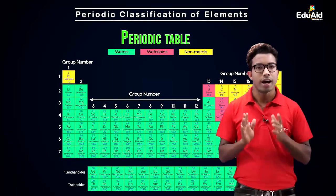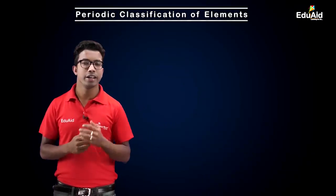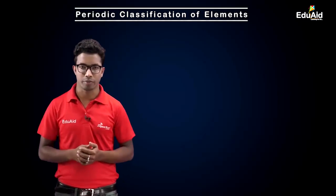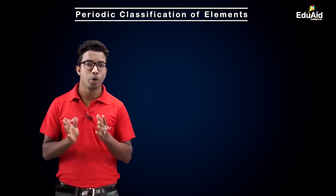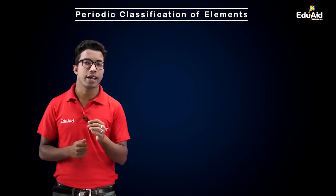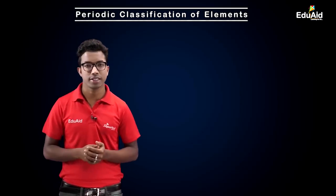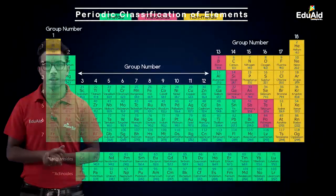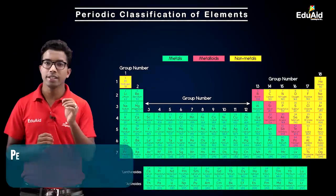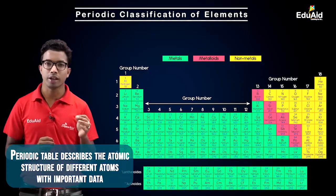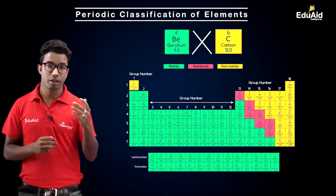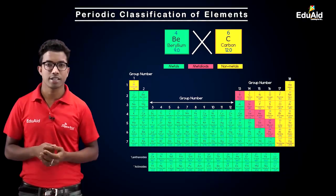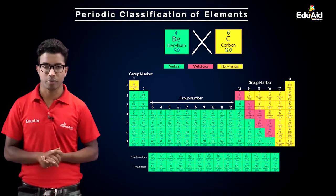Now let's discuss how the periodic table helps us in understanding chemistry. The first role is that the periodic table describes the atomic structure of all elements known to mankind. For instance, if a person wants to find out how many electrons an atom of a certain element has, or what is the weight of that element, they can find it just by looking at the periodic table. Each element has its own unique set of data — no two elements have similar data — so the periodic table helps us find important information like atomic weight, size, number of electrons, number of protons, and more.